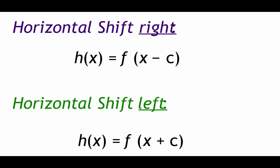Another type of shift is a horizontal shift — moving things left or right. The big difference between a horizontal shift and a vertical shift is that a horizontal shift happens inside of parentheses. If there's subtraction going on inside the parentheses, we shift the graph to the right that many spaces. If there's addition going on inside the parentheses, we shift the graph left that number of spaces.